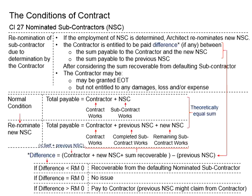Although it is not stated here, what if the difference is less than zero? That means the total sum recoverable from the defaulting subcontractor is insufficient to cover the damage, loss, and expenses due to the defaulting nominated subcontractor. Theoretically, the relevant amount should be able to be recovered from the defaulting nominated subcontractor; otherwise, the contractor will have to bear the relevant cost.